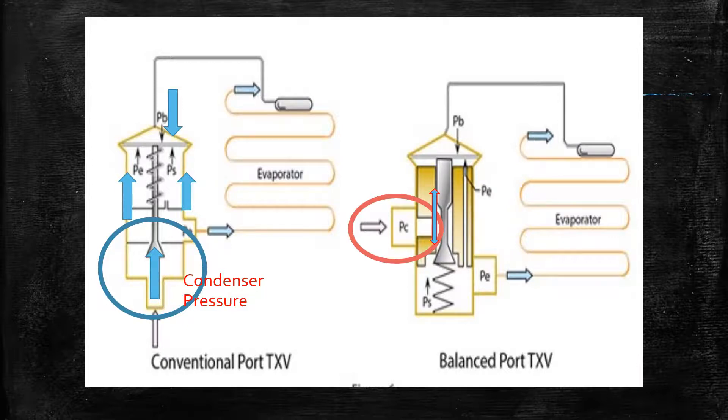Therefore, in a balanced port TXV the only pressures that we have acting upon it is the spring pressure, the evaporator pressure, and the bulb pressure, which gives us more accurate metering of the refrigerant into the evaporator.